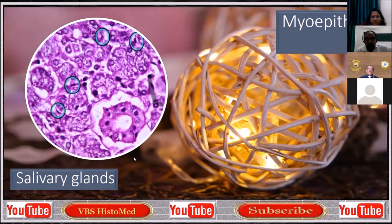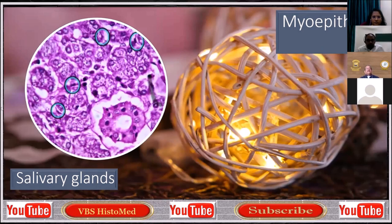This is salivary glands. I have particularly taken it because the contrast is beautiful. You can see I have highlighted four areas in circles — those are the myoepithelial cells, not routinely seen, but here there is good contrast, so I am able to identify them. These myoepithelial cells form a wire mesh-like structure around the acini, the contraction of which crushes the acini to release contents into the immediately available duct.